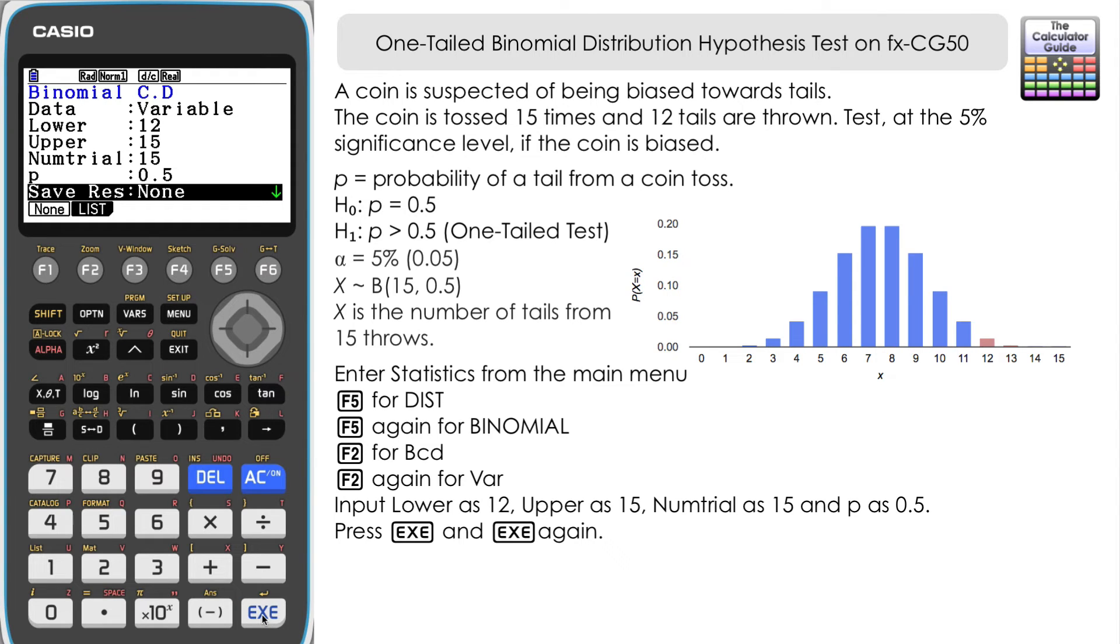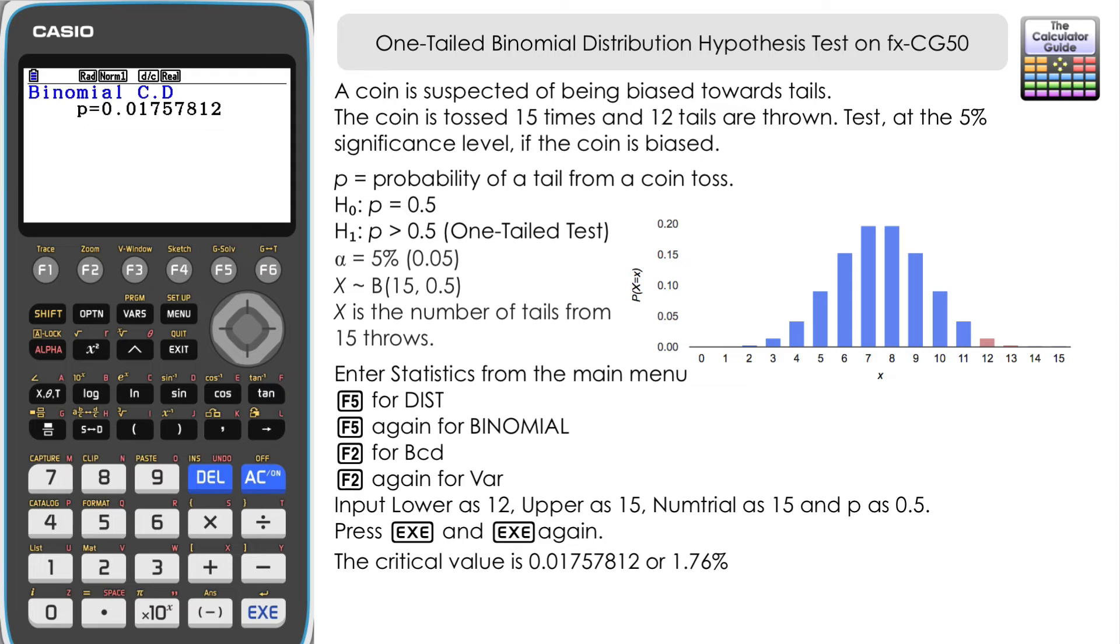Press Execute. We're not concerned about saving the result at this point, so execute once more. Here we have our critical value: 0.017578.